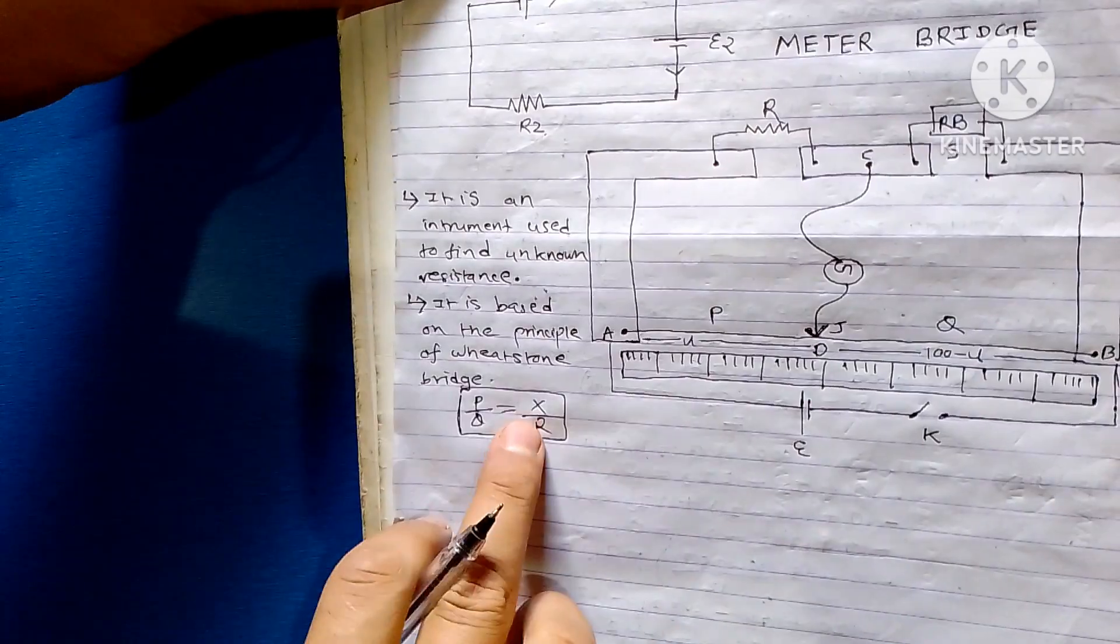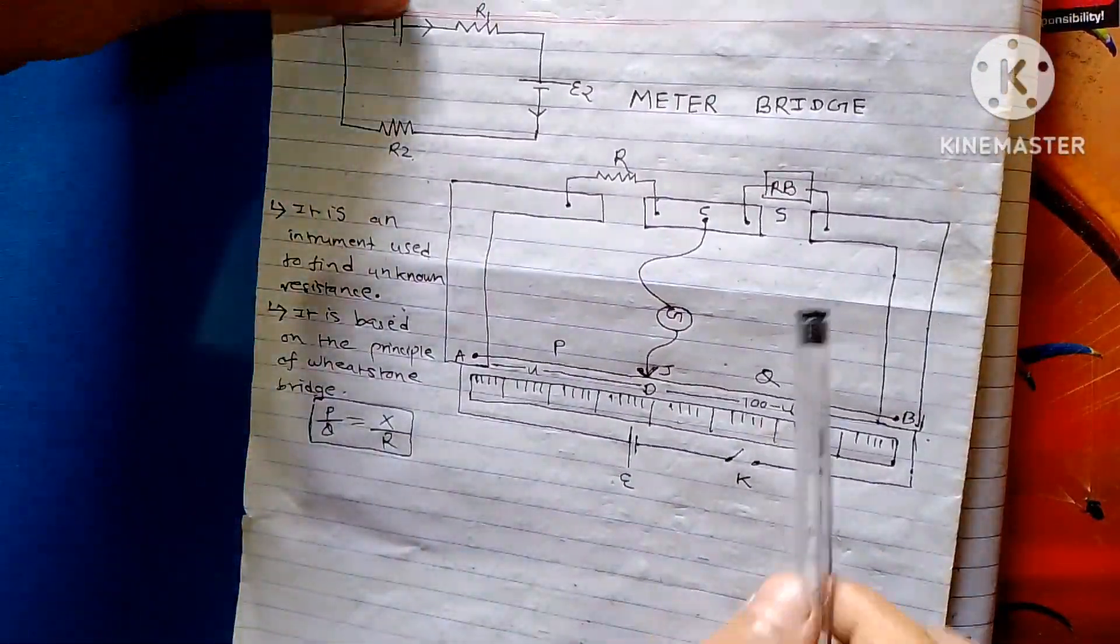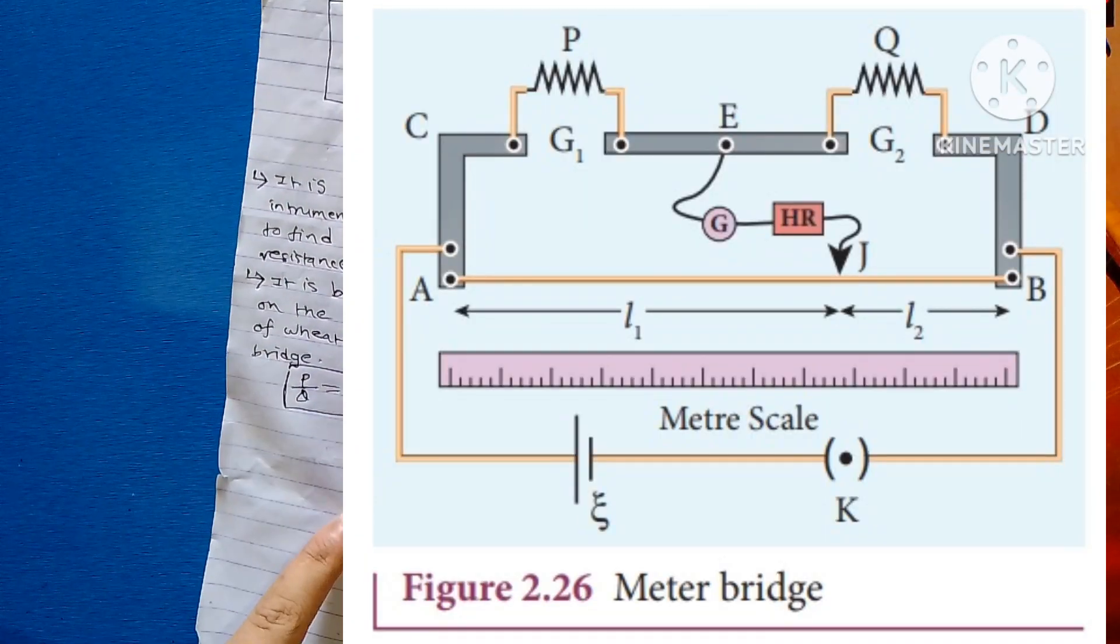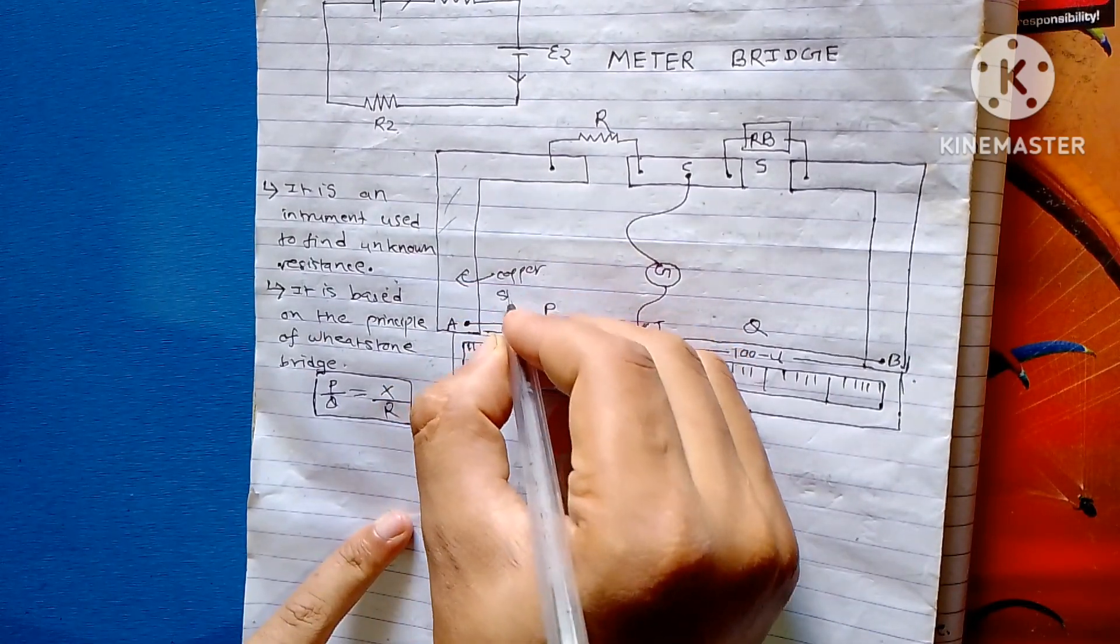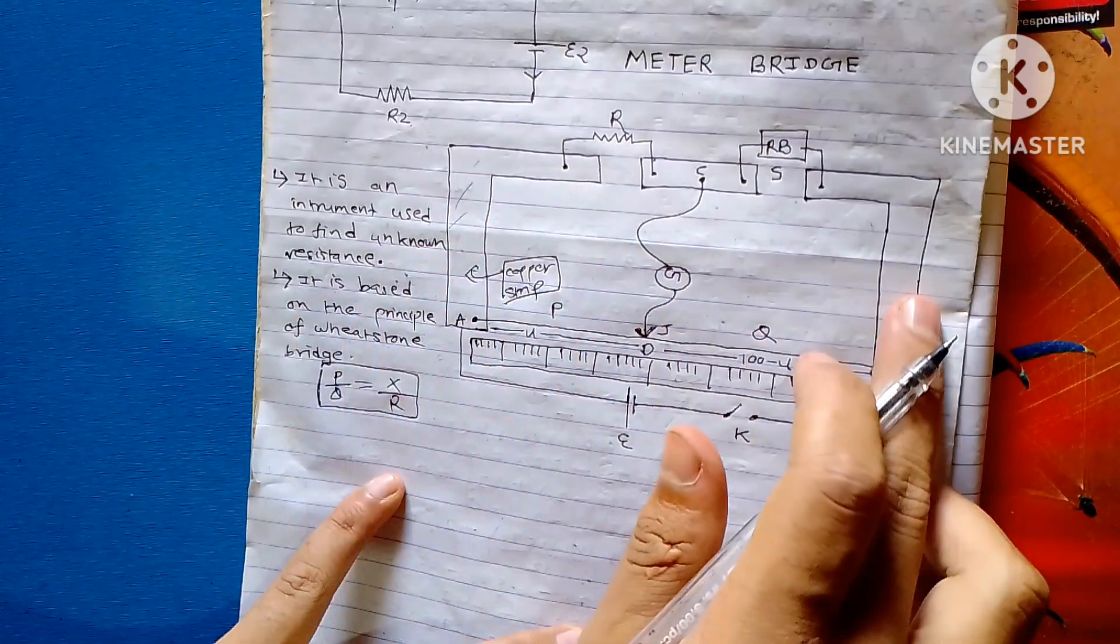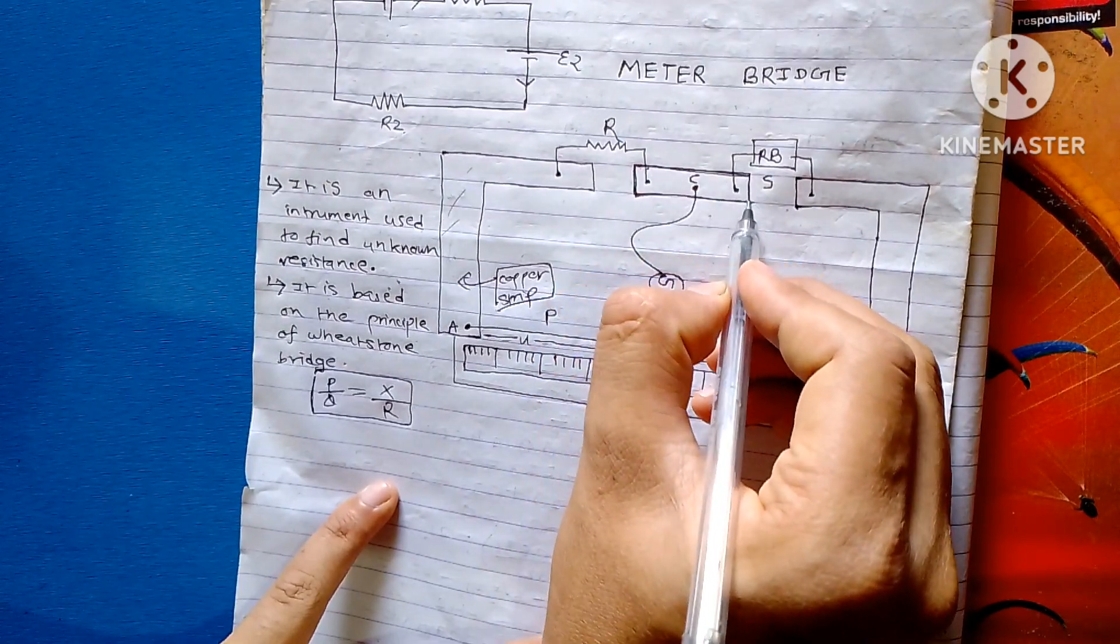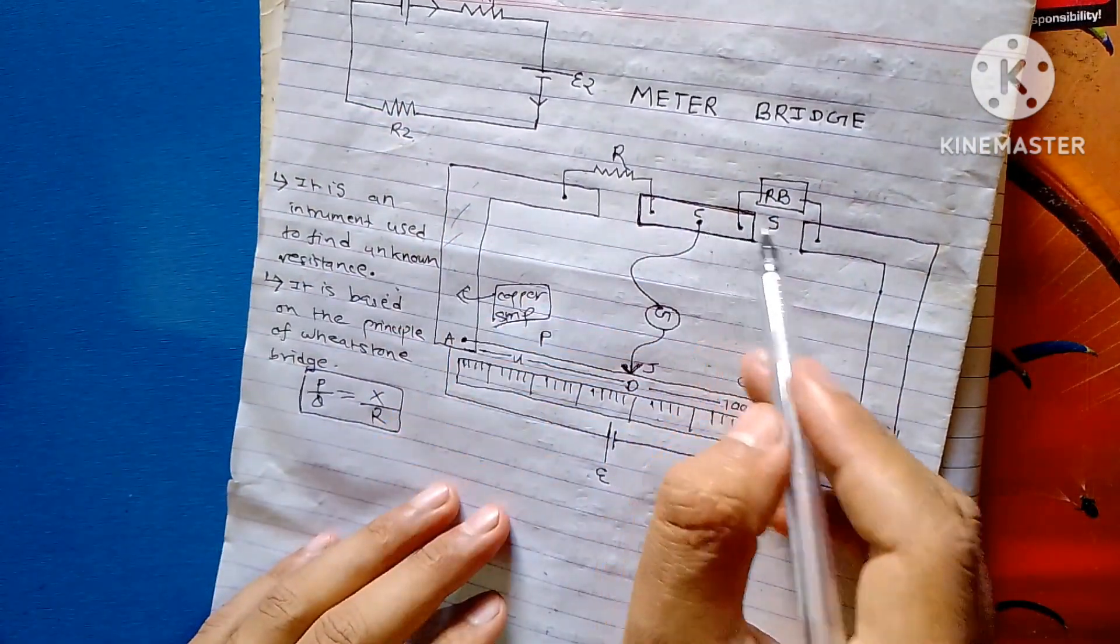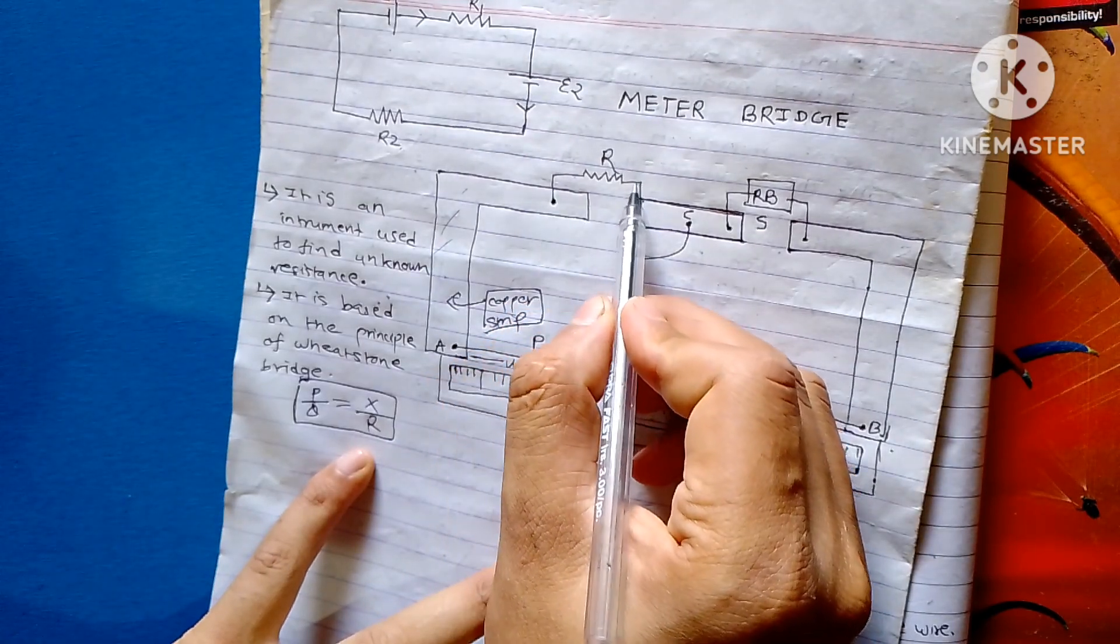This is a meter bridge. Here we have copper strip. There is a copper strip. This is copper, metallic. We use copper. This is a metal strip. This is a copper strip. This is a metal strip, this is iron. This is a metal strip.